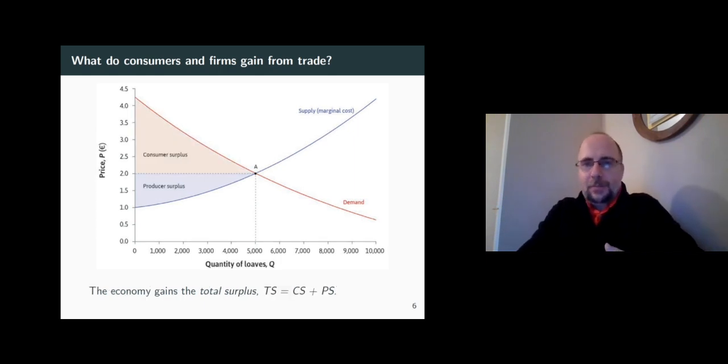So if we sum up the consumer and the producer surpluses, we will end up with the total surplus in the market. Notice that this is the theoretically highest surplus that both consumers and firms can get to.